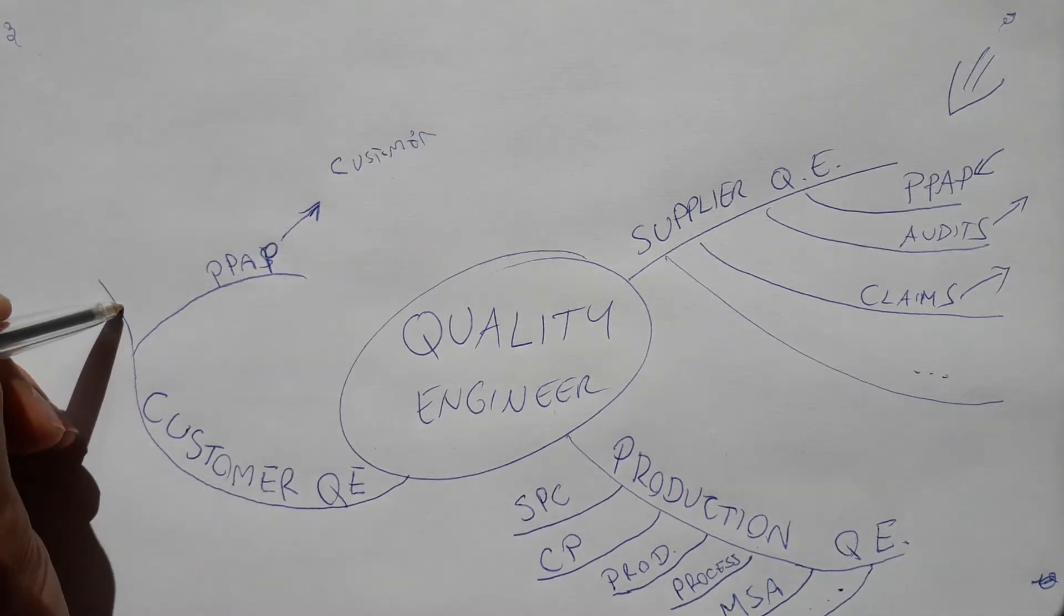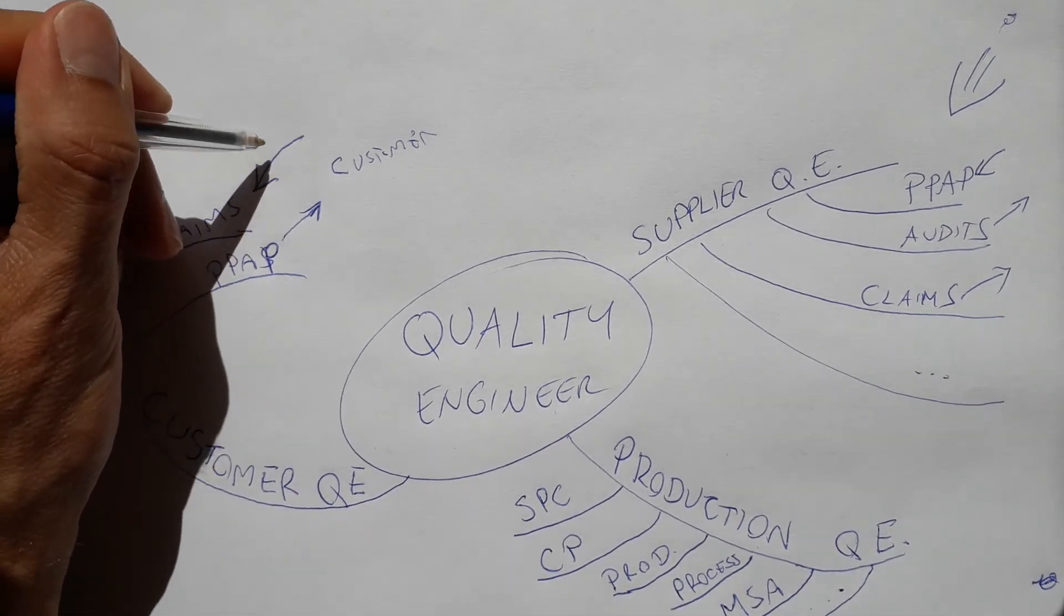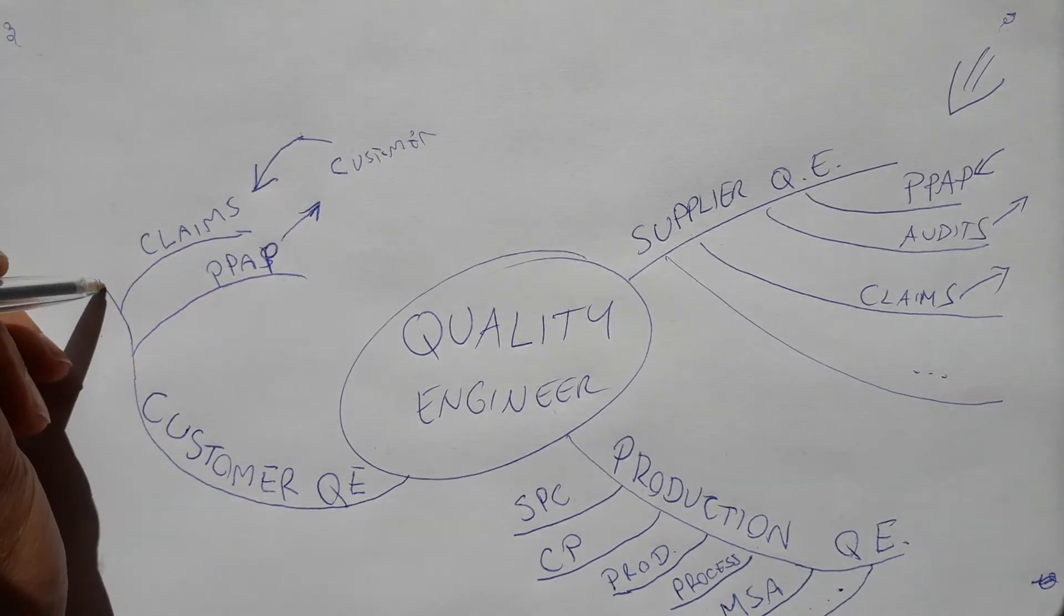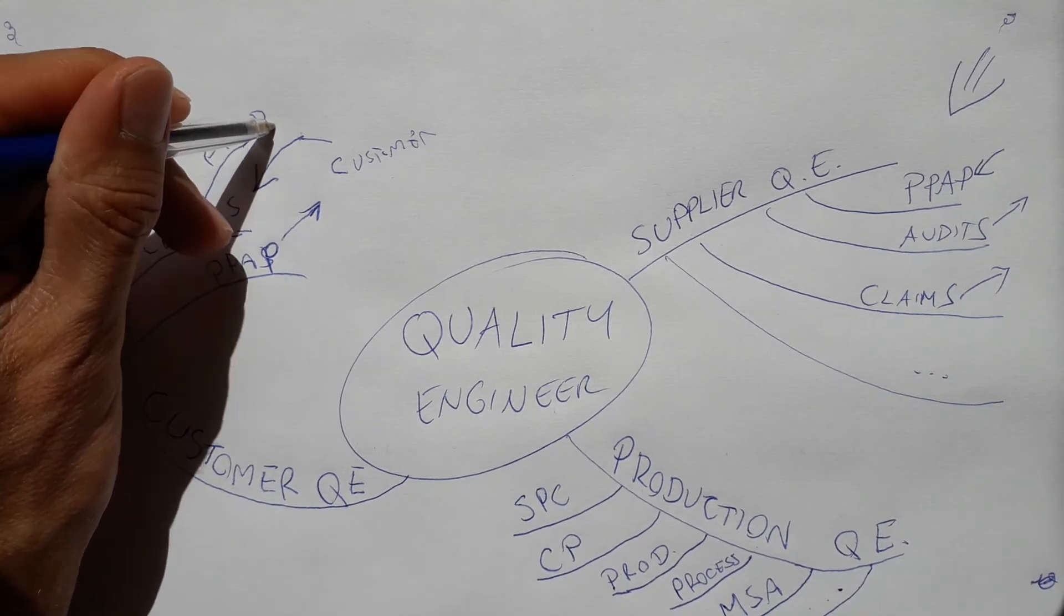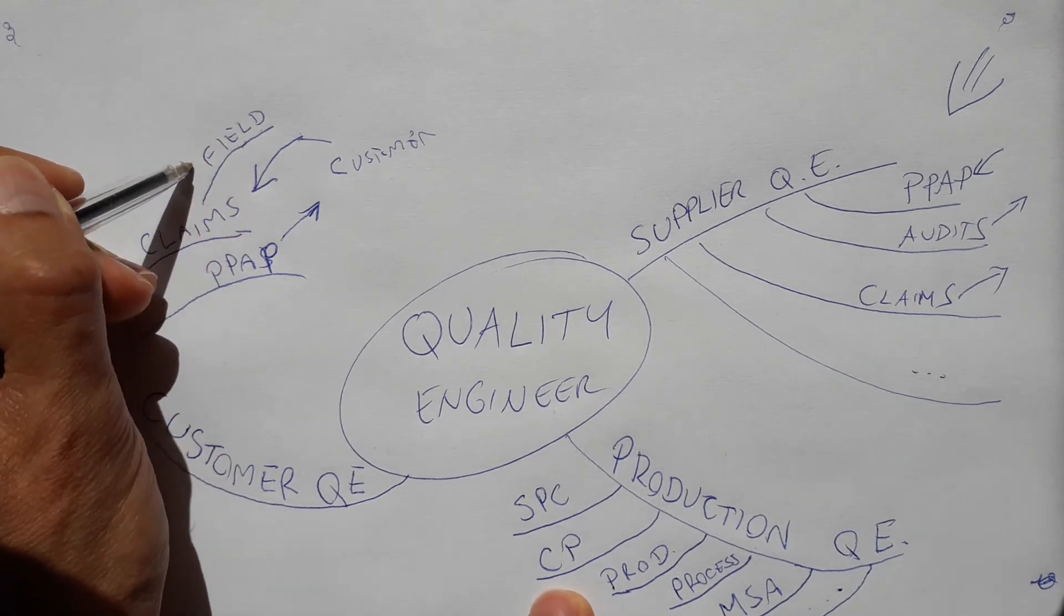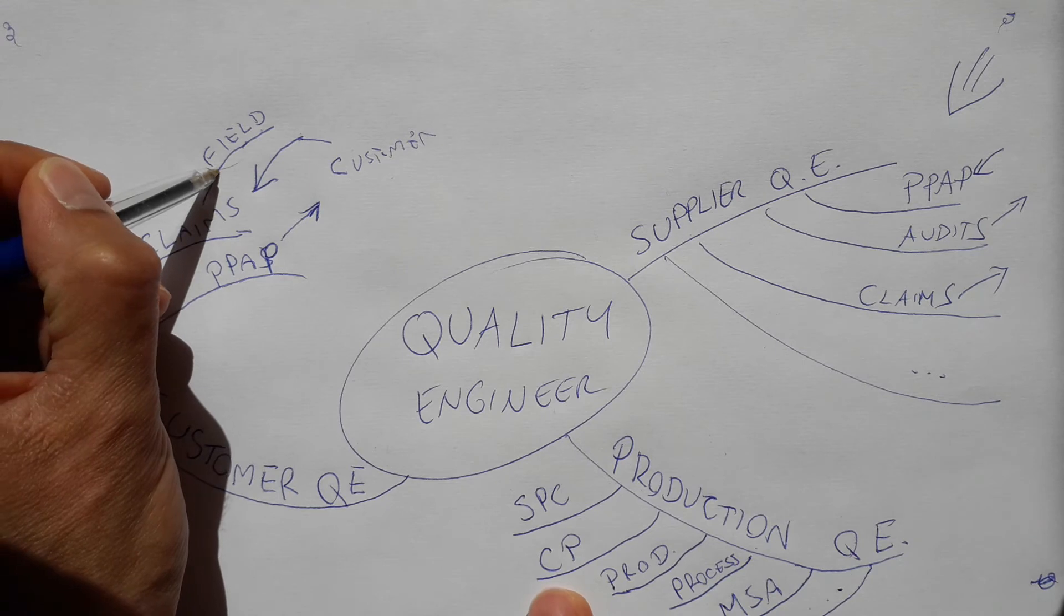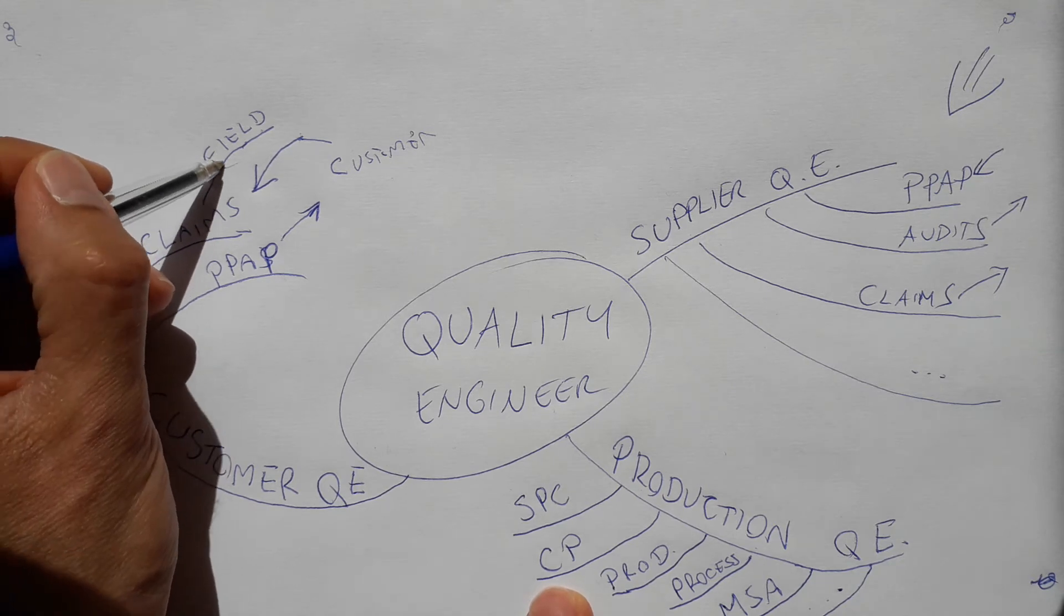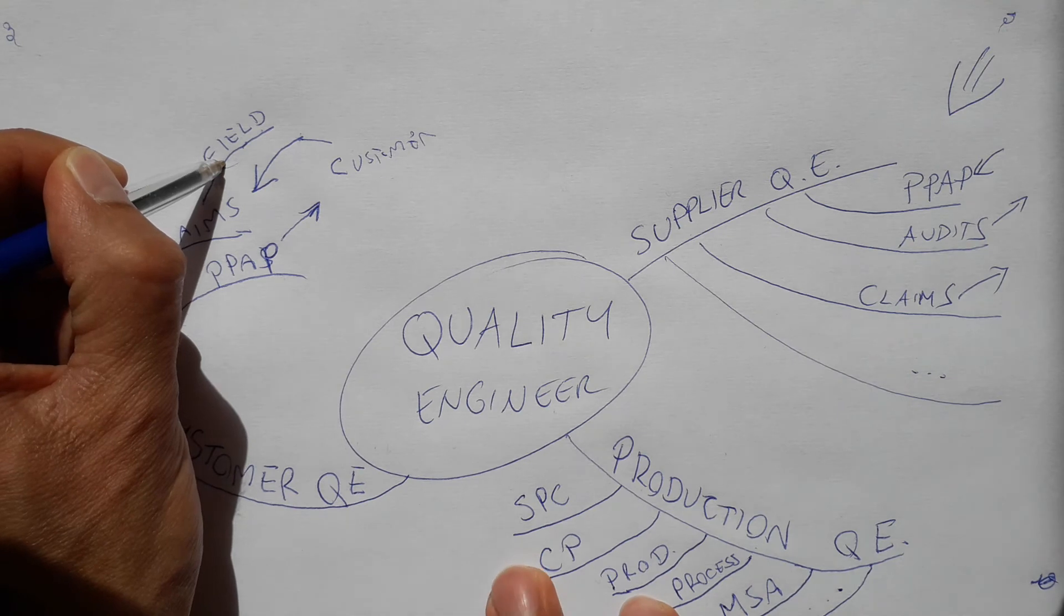They are as well dealing with claims, but the claims that are coming from the customer—field claims, which are a specific type of claims. This is where you have the part already installed in the car and there is an issue. The client who is driving the car returns the car back to the dealer, and our part fails. This is a field claim. It was already in the field, already installed, and driving in the car.